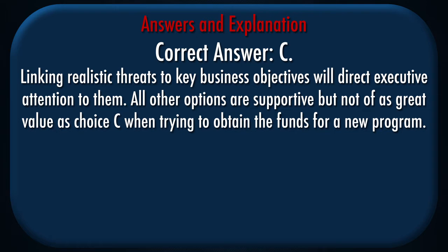Correct answer: C. Explanation: Linking realistic threats to key business objectives will direct executive attention to them. All other options are supportive but not of as great a value as choice C when trying to obtain the funds for a new program.